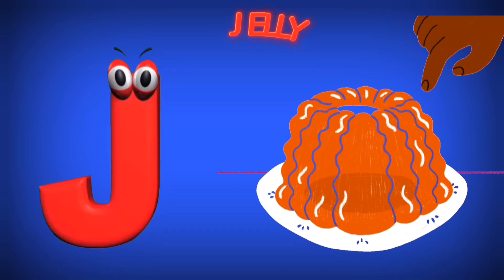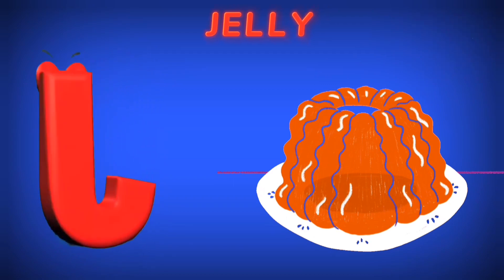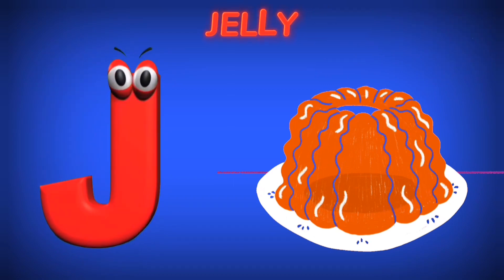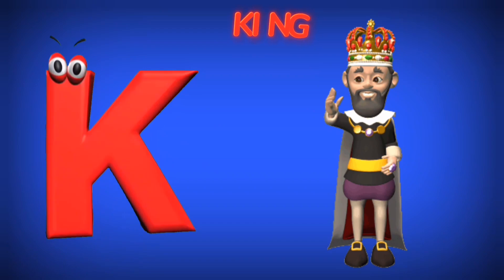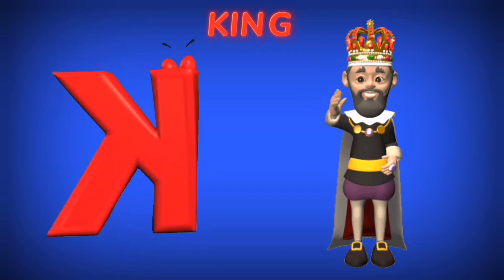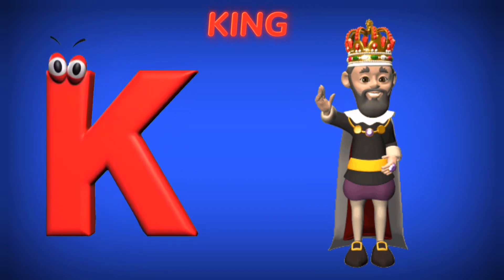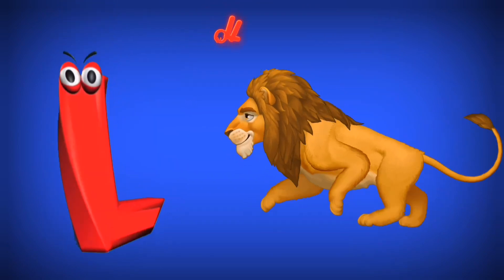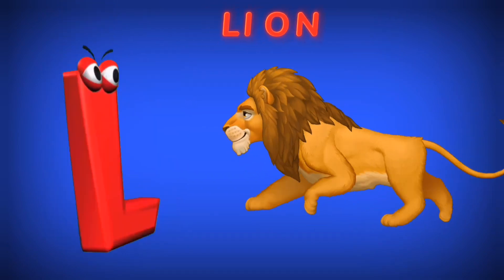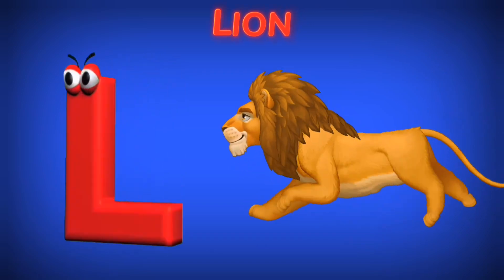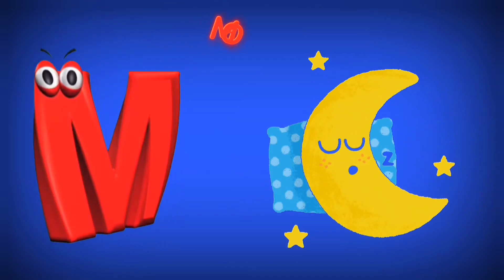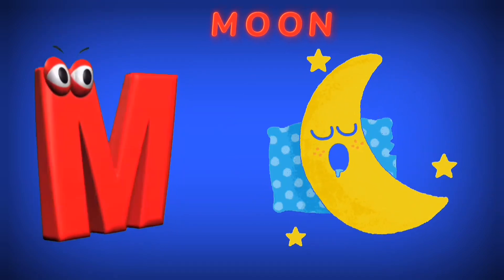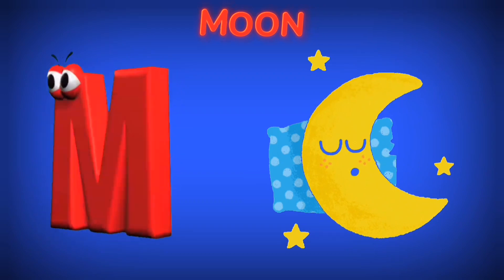J is for Jelly. J, J. K is for King. K, K. L is for Lion. L, L. M is for Moon. M, M.